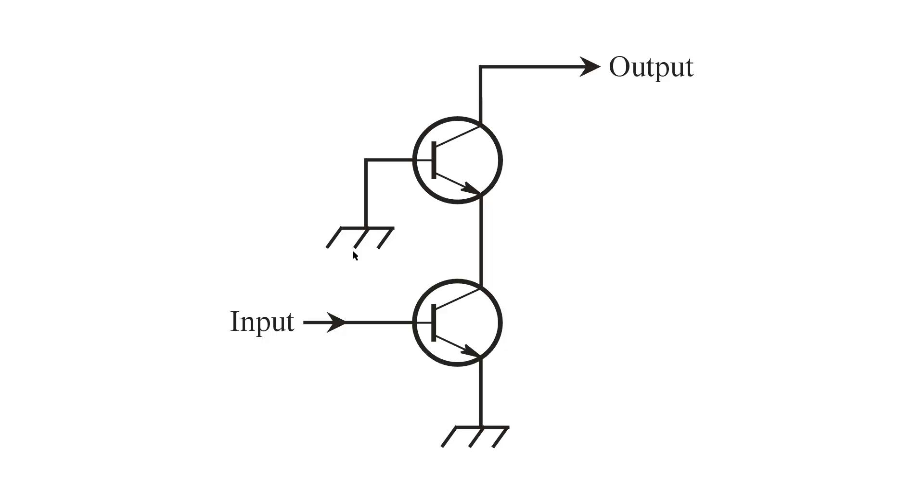And in the case of vacuum tubes, should you ever encounter a cascode vacuum tube circuit, you would have a common cathode circuit followed by a common grid circuit. The output would go from the plate of the first circuit to the cathode of the second. So the input would go to the control grid of the first stage and the cathode of the second stage, and the control grid of the second stage would be grounded.